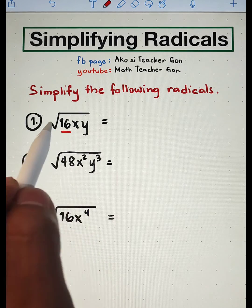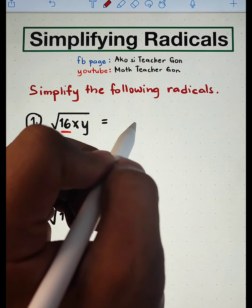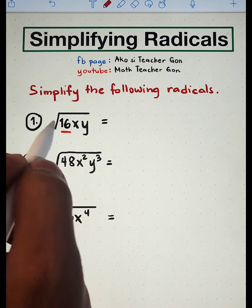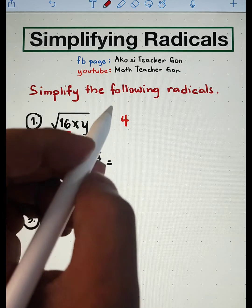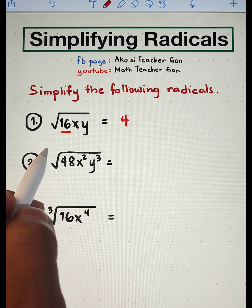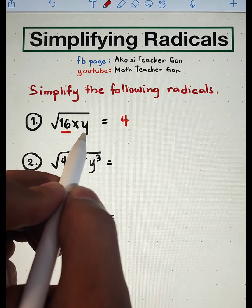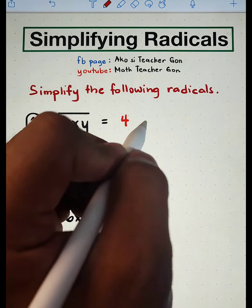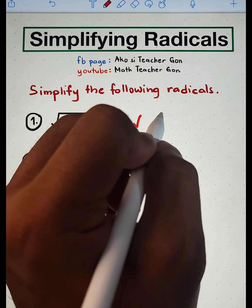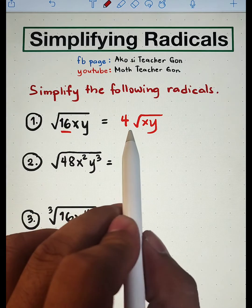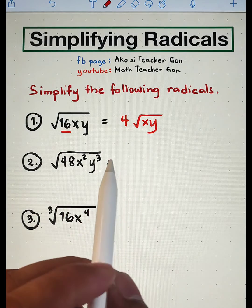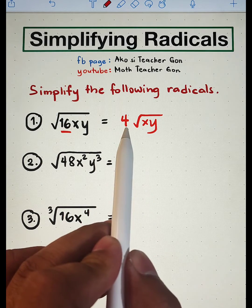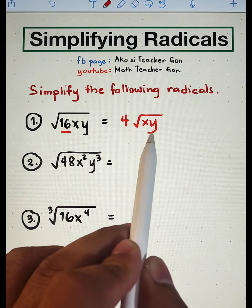Here, only 16 is a perfect square, so we can extract the square root. The square root of 16 is 4. We will put that outside the radical sign. And since x and y are not perfect squares, they will remain inside the radical sign. Meaning, the answer in number one is simply 4 times the square root of xy.